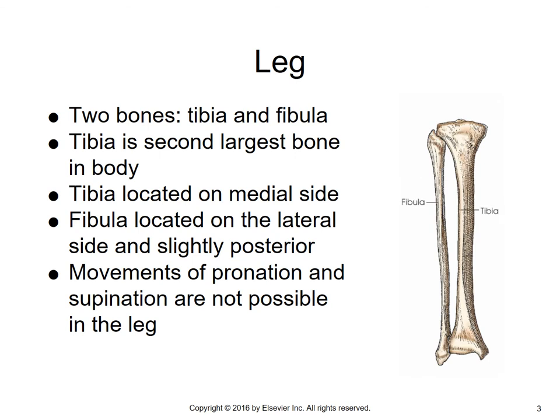We'll begin distally with talking about the lower leg. The lower leg consists of two bones: the tibia and the fibula. The tibia is the medial bone of your lower leg. The fibula, the more slender bone, is the lateral.